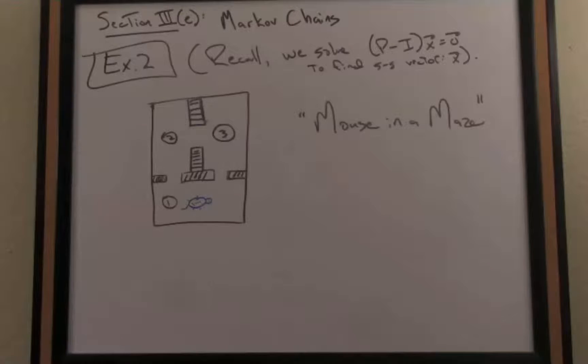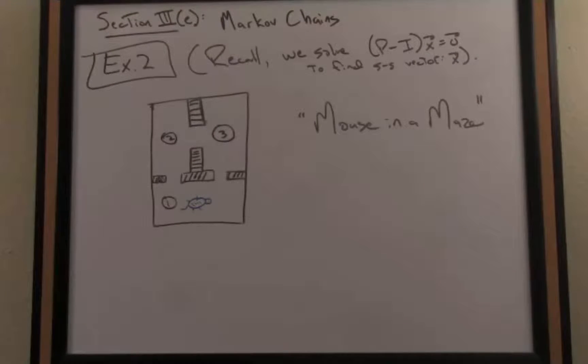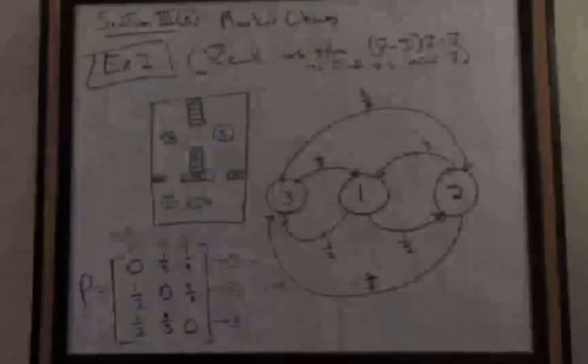You can think of the mouse's choice to transition from one room to the next as a probabilistic event. In this fashion, we're going to model a really primitive, almost artificial intelligence or AI system based on those probabilities. Let's draw a directed graph that explicitly shows these transitional probabilities, and from there we can construct our stochastic matrix.